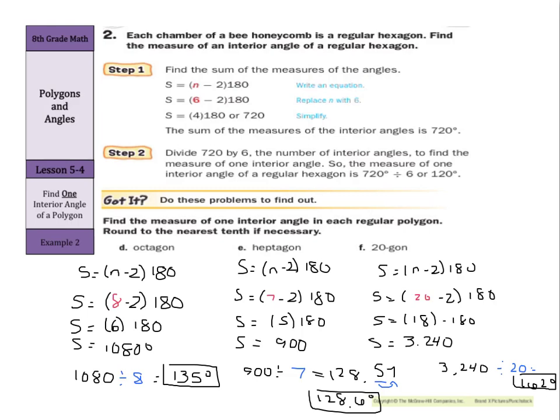So when you're looking for just one angle, use the same formula. Find the total measurement of the polygon. Then divide by your number of angles.